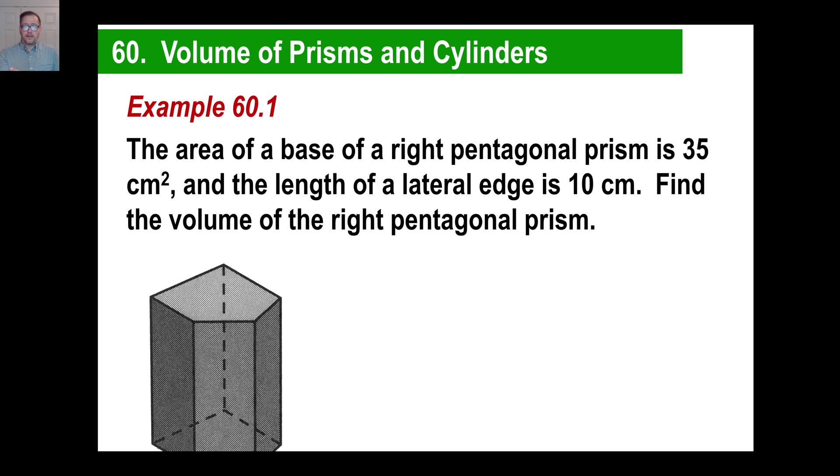The area of the base of the right pentagonal prism is 35 square centimeters. In other words, look at the top of that thing. It's a pentagon, five-sided figure. The area of that is 35 square centimeters. The length of a lateral edge is 10. What's the volume? Well, if you want to look at that as a cake, in other words, when you say volume, you're trying to figure out how many cubes, centimeter cubes, cubic centimeters will go into that thing.